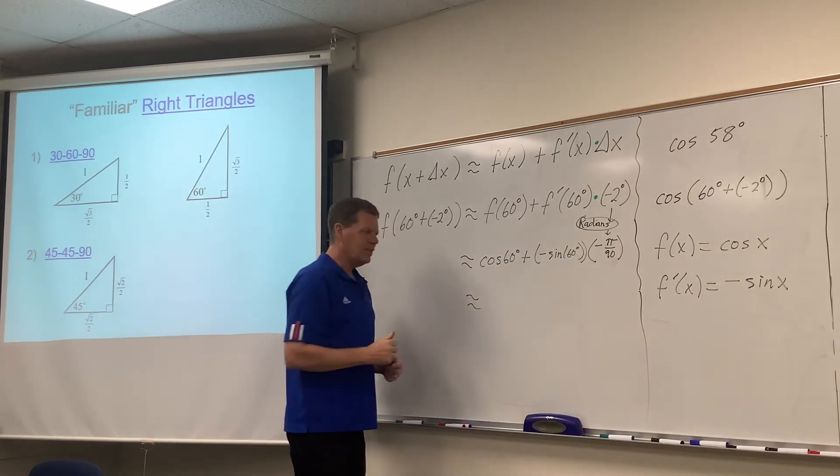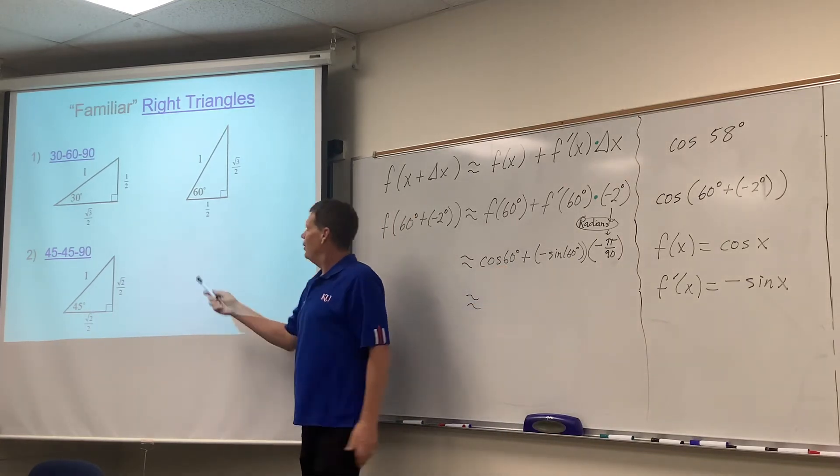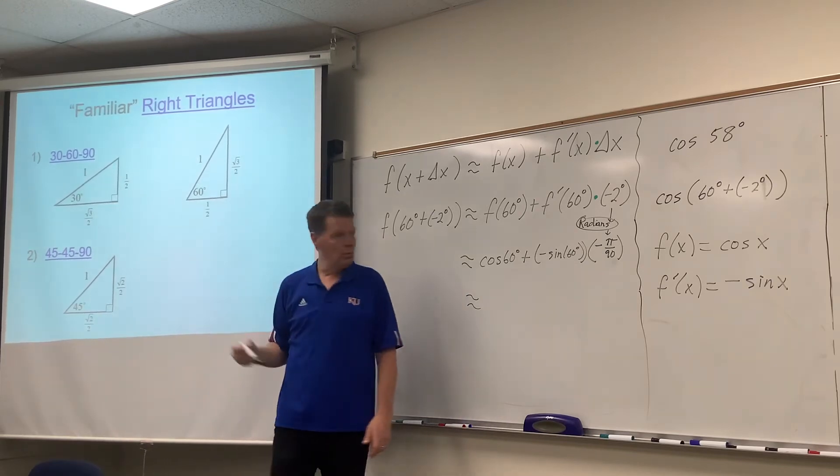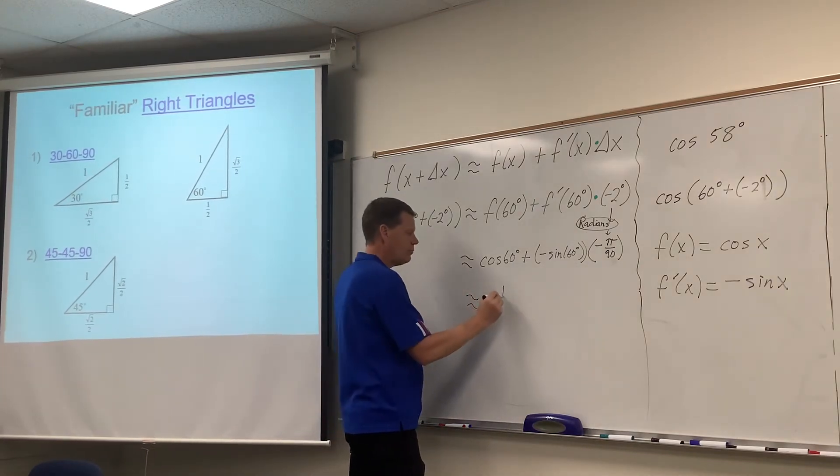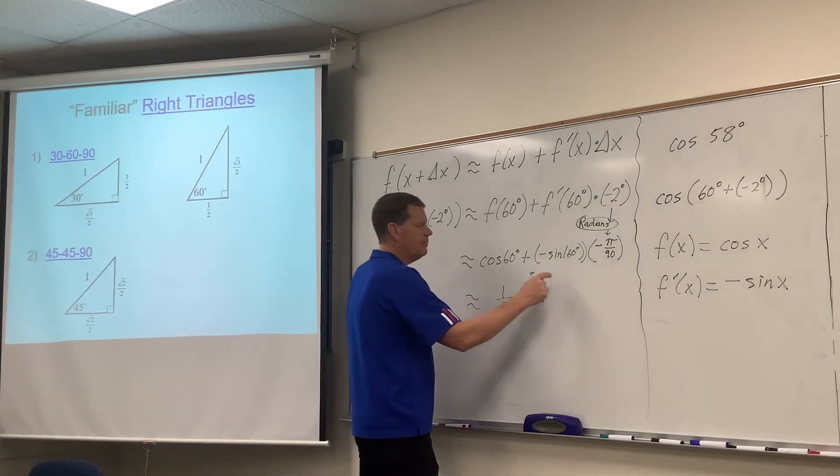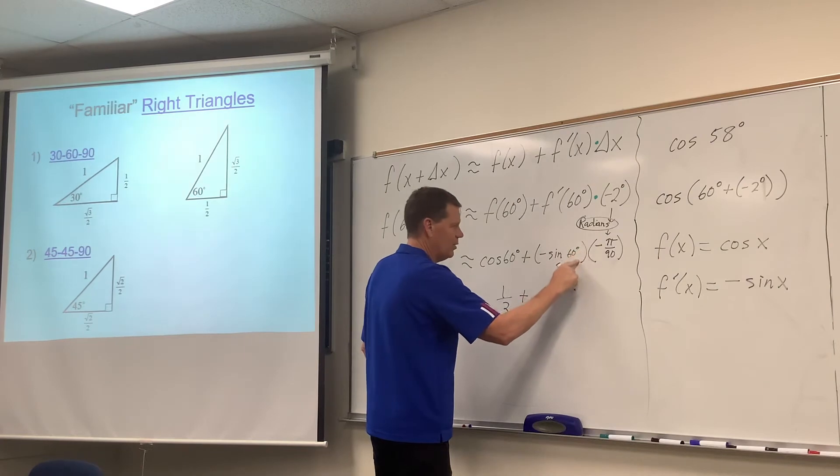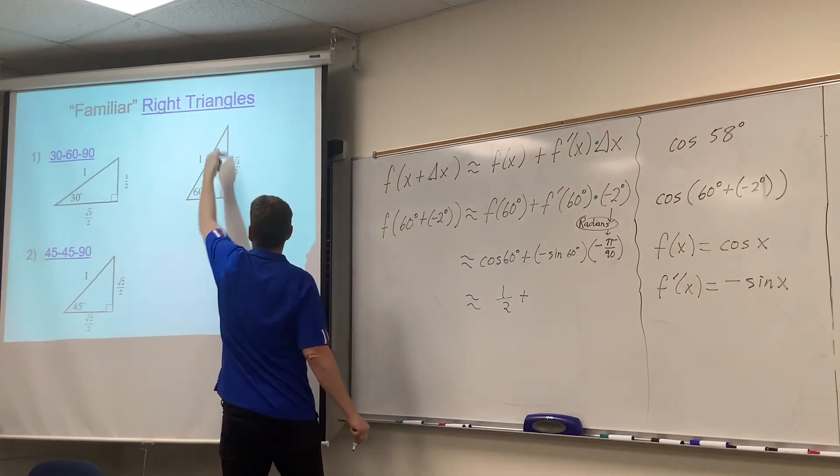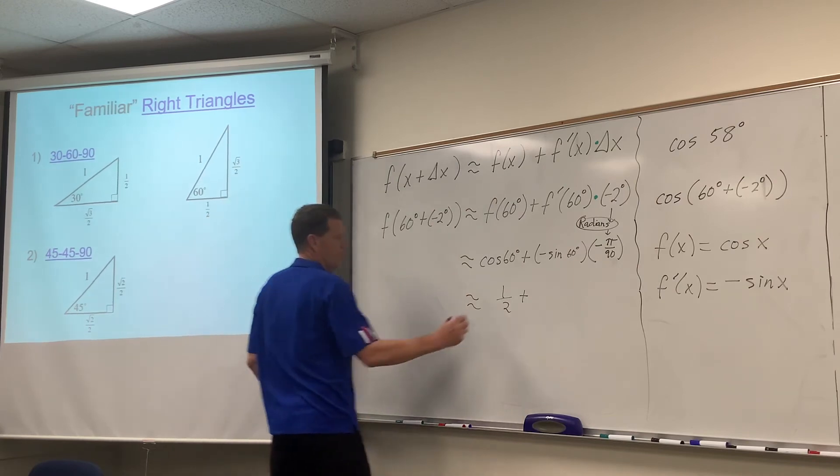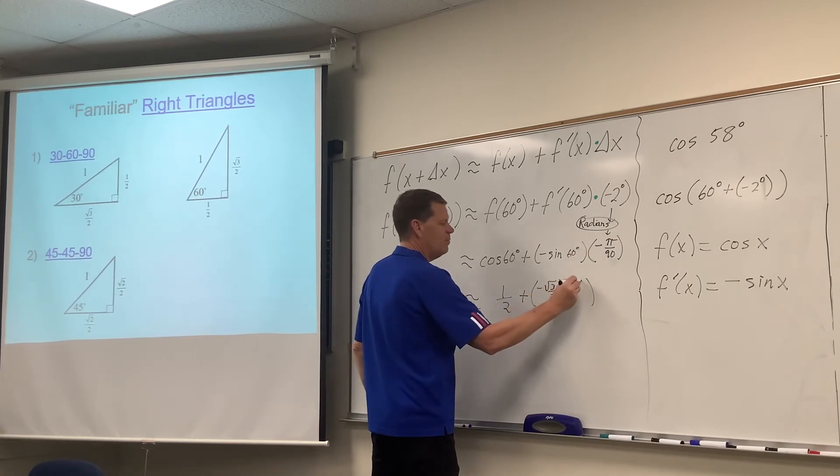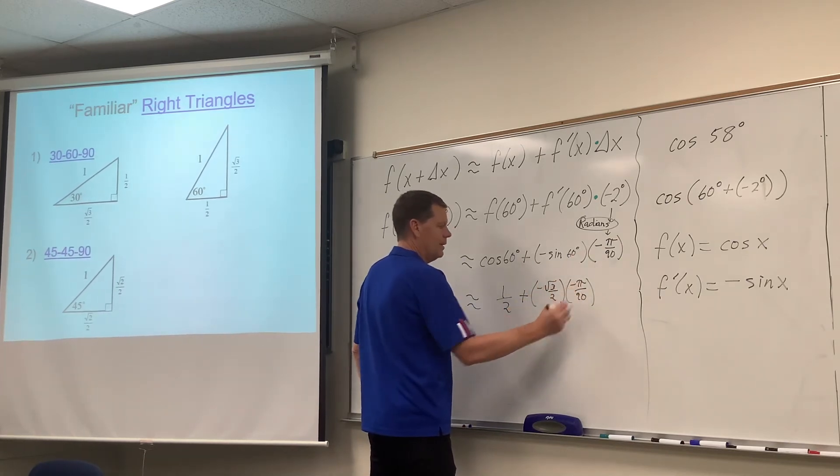Okay, now the cosine of 60 degrees, here's our picture, 60 degrees cosine, right? Horizontal, so that would be 1/2. Alright, negative sine of 60, I don't think I need those parentheses there actually. Negative sine, okay, sine is this one. Negative sine, so that would be negative square root of 3 over 2, and then we multiply that by negative pi over 90.